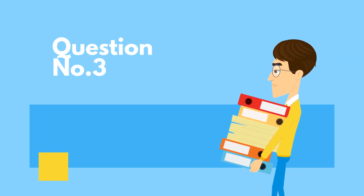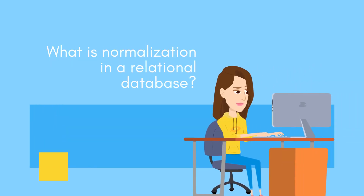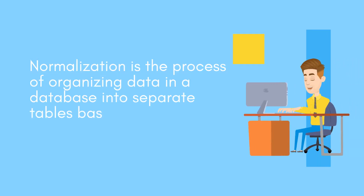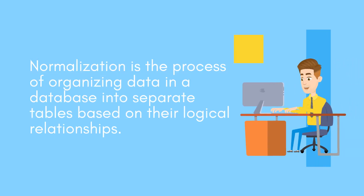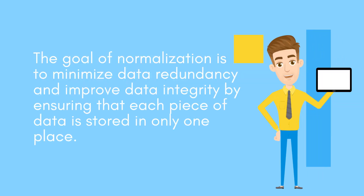Question number three: What is normalization in a relational database? Normalization is the process of organizing data in a database into separate tables based on their logical relationships. The goal of normalization is to minimize data redundancy and improve data integrity by ensuring that each piece of data is stored in only one place.